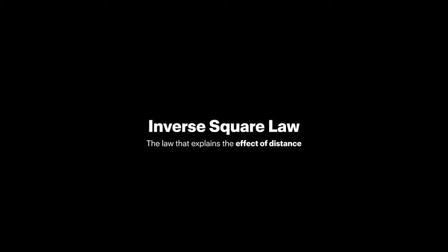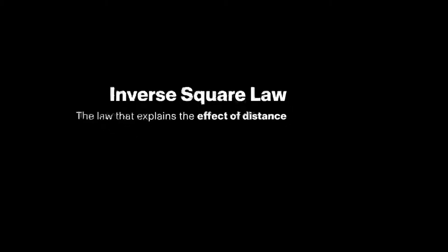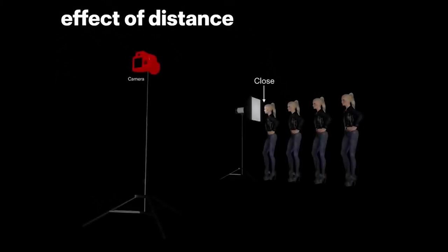Some people find the inverse square law kind of scary, some find it like a trustworthy pillow to sleep on. We're going to look at it. I've chosen to subtitle it: 'The law that explains the effect of distance,' because that is what it's all about — the effect of the distance between the light source and the object you are lighting. What happens when you have it at different distances?